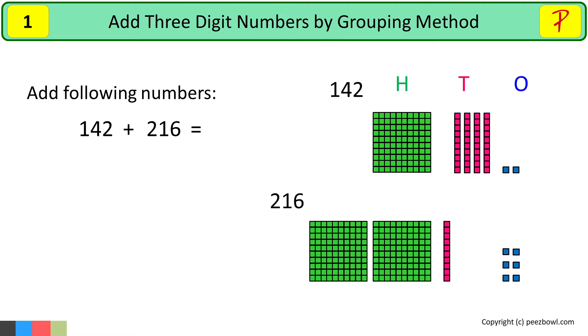For addition, we need to show all numbers together. We always start addition or subtraction from ones place. Let us bring all ones squares together. We have two ones in 142, I will move it below with six ones in 216.